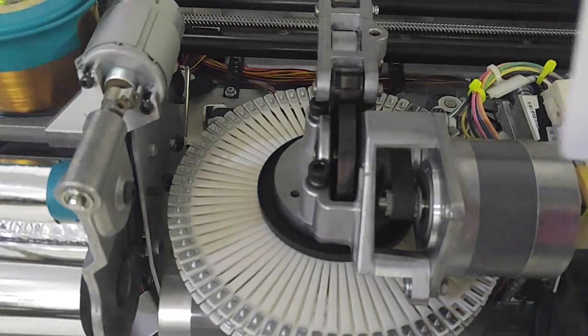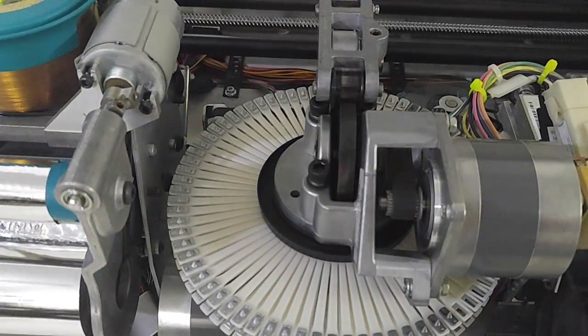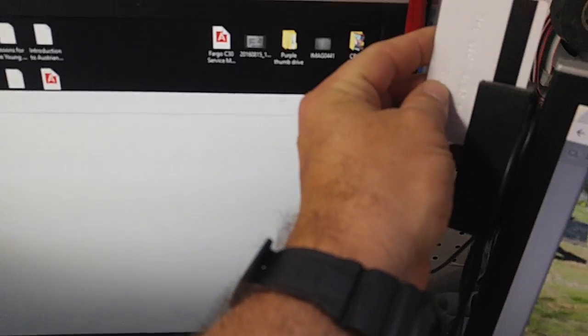So now that we know that the topping, embossing, and the mag encoding work, you can test as well by just using notepad and a simple stripe reader.